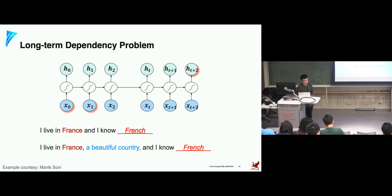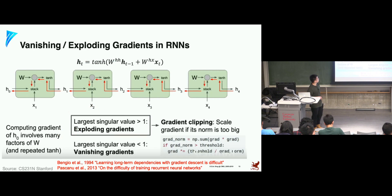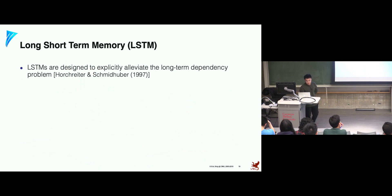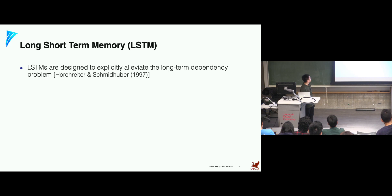With these two issues — vanishing/exploding gradients and long-term dependency — around 1997, a new version of recurrent network was introduced called Long Short-Term Memory, or LSTM, specifically designed to alleviate the long-term dependency problem and the vanishing gradient problem.